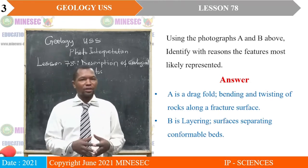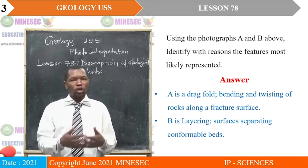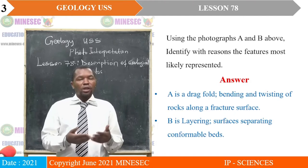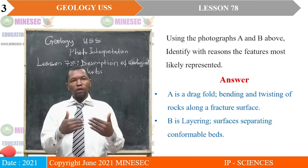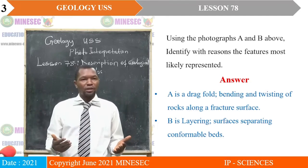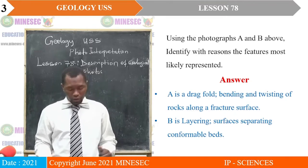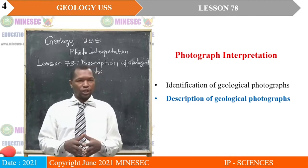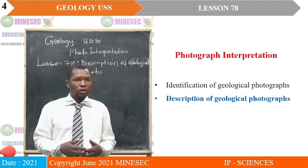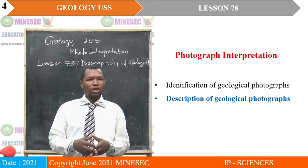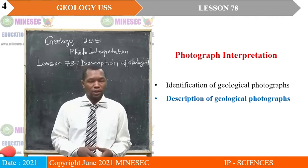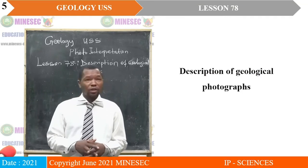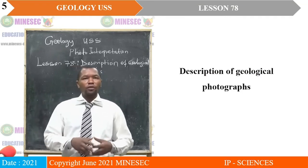Photograph B is layering. Why? Because you have surfaces separating conformable beds — you saw a layer line after each layer, meaning that between each layer there is a contact. So they are conforming with no distortions. We are still under the subtopic photograph interpretation — identification of geological photos — and we are now going to proceed to description of geological photographs. Lesson 78 is titled description of geological photographs.